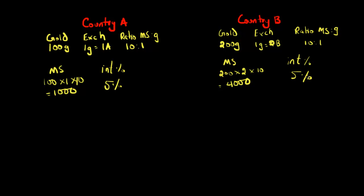The first advantage to being on the gold standard is that it makes it very easy for people who are exporting and importing goods between country A and country B — it makes it very easy for them to trade. The reason for that is because there's no exchange rate volatility. Because of the gold standard, there's a fixed exchange rate between the currencies: one country A dollar is equal to two country B dollars.